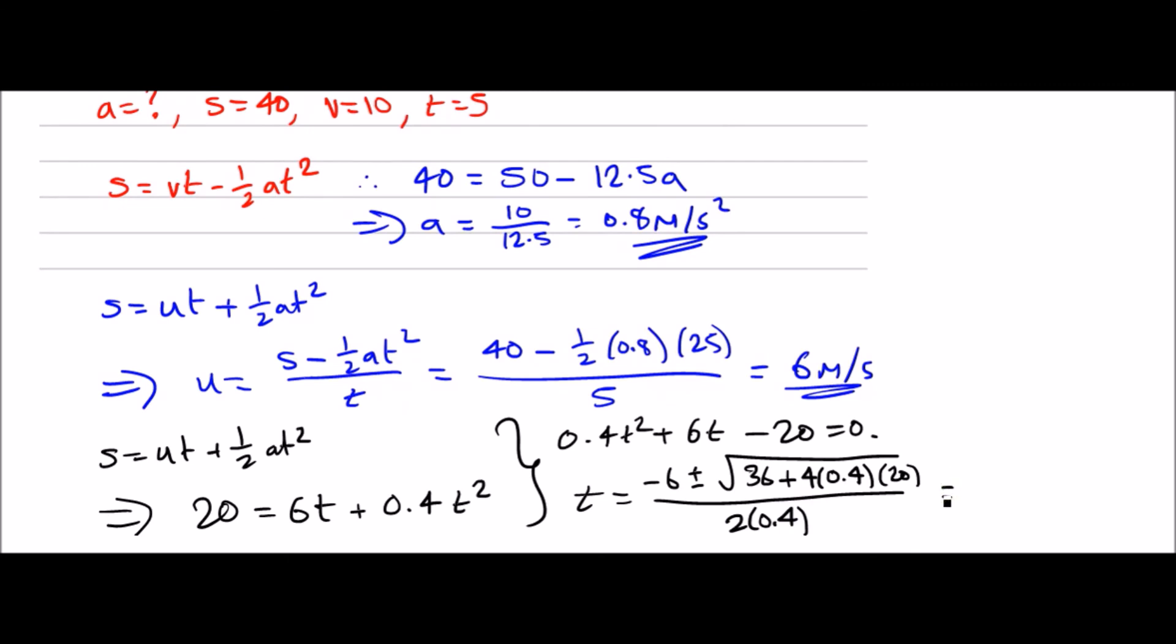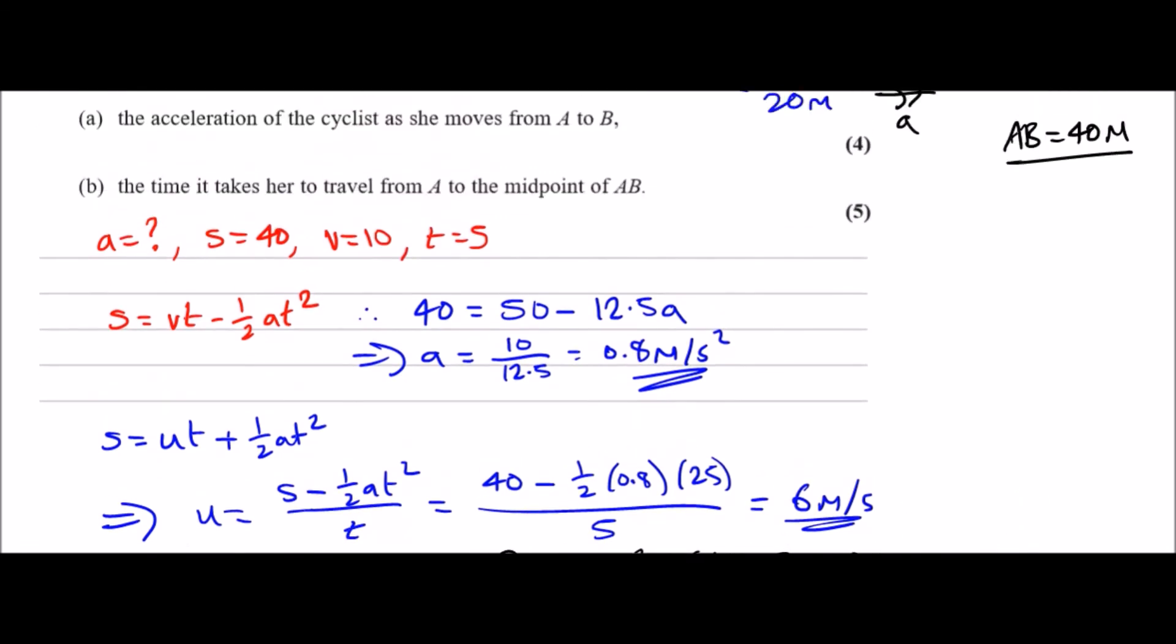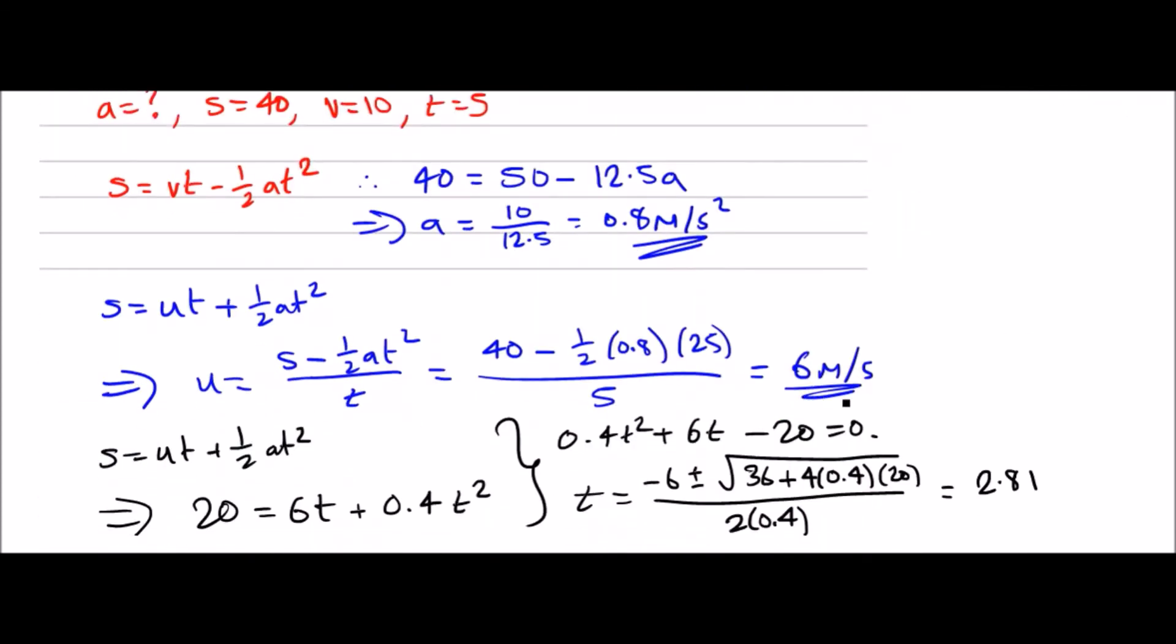I need to quickly calculate this. Minus 6 plus 36 times 0.4 times 20. Always double check if I did it right. I got the first result was 2.81, so 2.81 seconds to three significant figures. That's when I use a plus sign. If I use a negative sign you'll get a negative time, so that means the only solution would be 2.81 seconds.